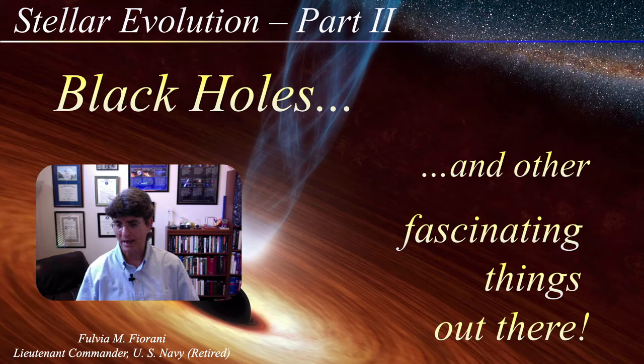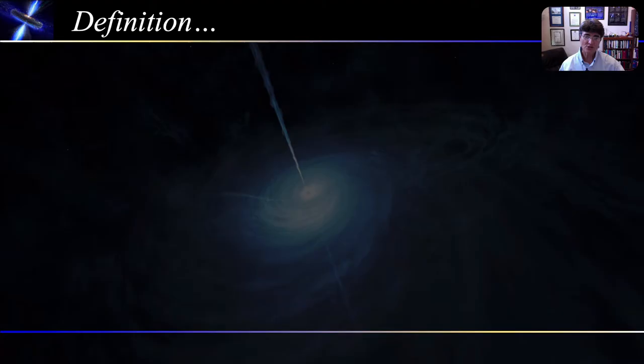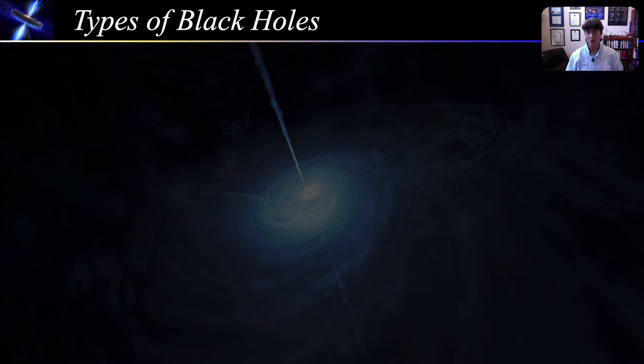Almost everyone has heard of black holes, but not many actually understand what they are. So that will be our goal for today. We start with the definition of a black hole. A black hole is a region of space where matter is compressed to such high density, and the gravitational field is so strong that nothing can escape, not even light. Our goal today is to understand what this rather seemingly simple definition actually means. Now, there are three types of black holes, and they are distinguished by their mass. The first are stellar black holes.